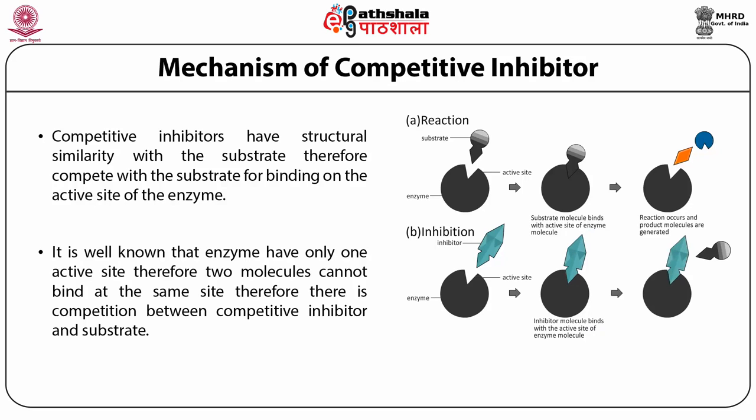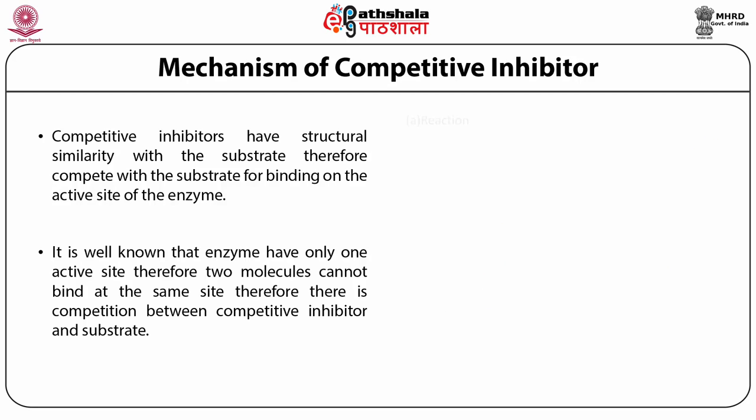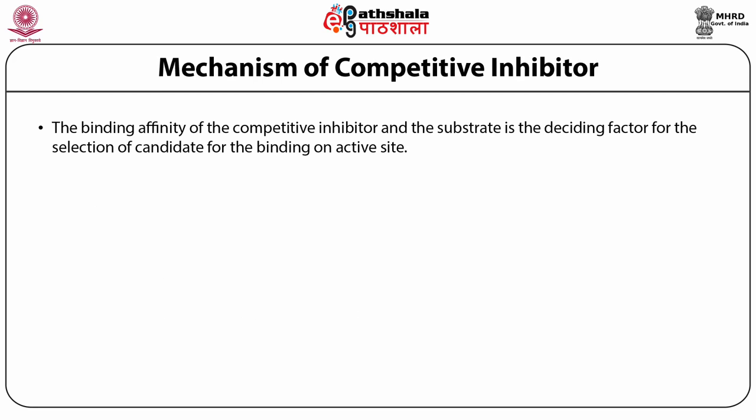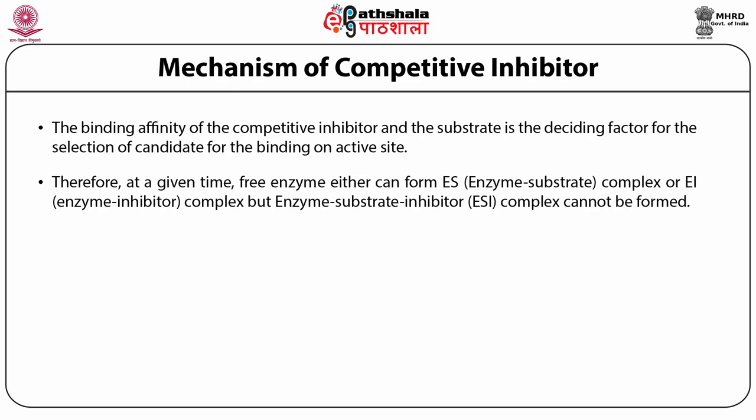In this figure, you can see that once the substrate is at the active site, the inhibitor cannot bind, while if the inhibitor is there, the substrate cannot bind. The binding affinity of the competitive inhibitor versus the substrate is the deciding factor for which candidate binds to the active site. If the inhibitor has better binding affinity, it will bind; if the substrate has better affinity, it will bind. Therefore, at any given time, free enzyme exists either as an ES complex when substrate binds or as an EI complex when inhibitor binds.